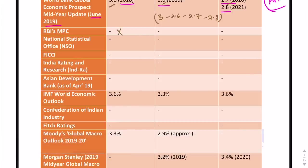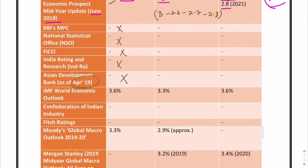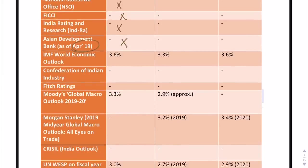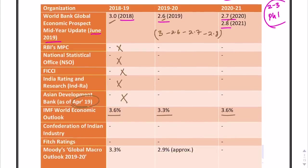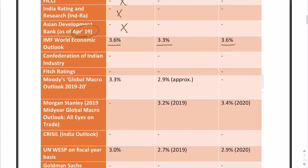RBI's MPC has not given any world forecast. National Statistical Office has not given anything. FICI has not given anything. IndRA has not given anything. Asian Development Bank as of April 2019 has not given anything. IMF World Economic Outlook says 3.6%, 3.3%, and again 3.6% for 2018-19, 2019-20, and 2020-21 respectively.